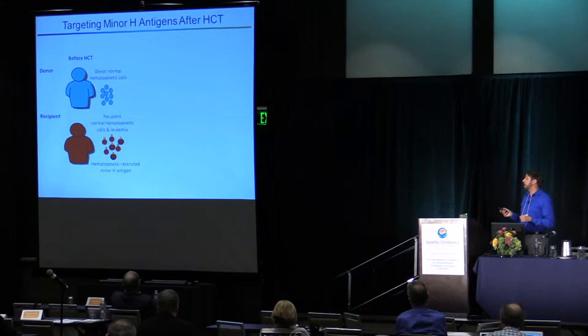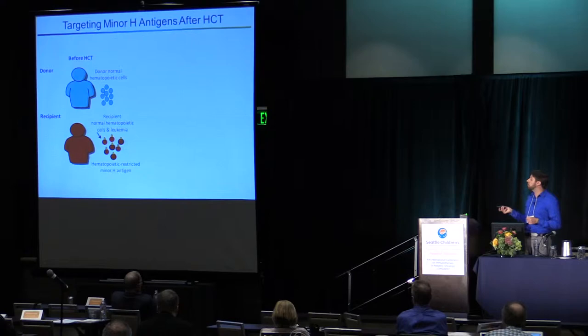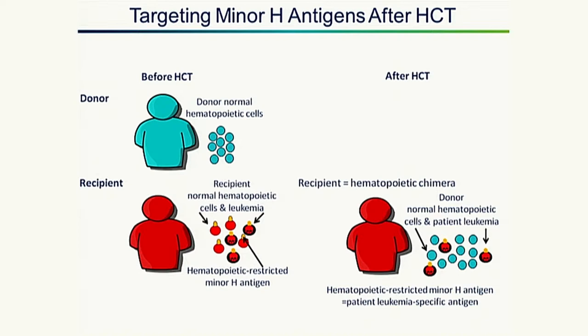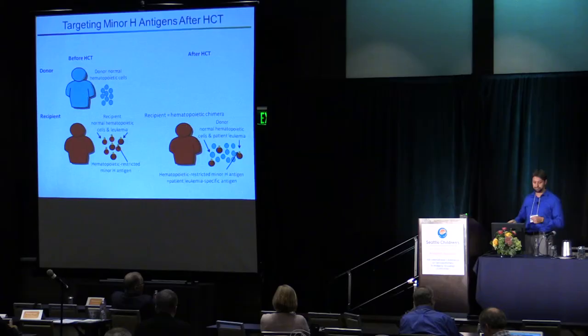In the context of transplant, a recipient will have normal cells and also leukemia cells. Both of those cells present minor antigens on their cell surface before the transplant. After the transplant, the recipient has what we call hematopoietic chimera, formed by donor hematopoietic cells and the patient's leukemia. In this case, minor antigens are only expressed by the leukemia cells, so we can have T-cells that attack those leukemia cells without damaging the donor cells.